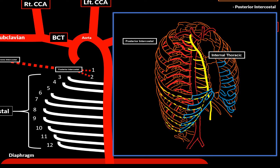The upper six posterior intercostal arteries will connect directly with the internal thoracic artery through the anterior intercostal arteries. The internal thoracic artery will split at the seventh rib into the superior epigastric artery, which meets up with the inferior epigastric artery, and the musculophrenic artery. The musculophrenic artery is the one that gives off the lower six anterior intercostal arteries, connecting with the lower six posterior intercostal arteries. Through the posterior and the anterior intercostal arteries, the muscles between the ribs can be supplied.